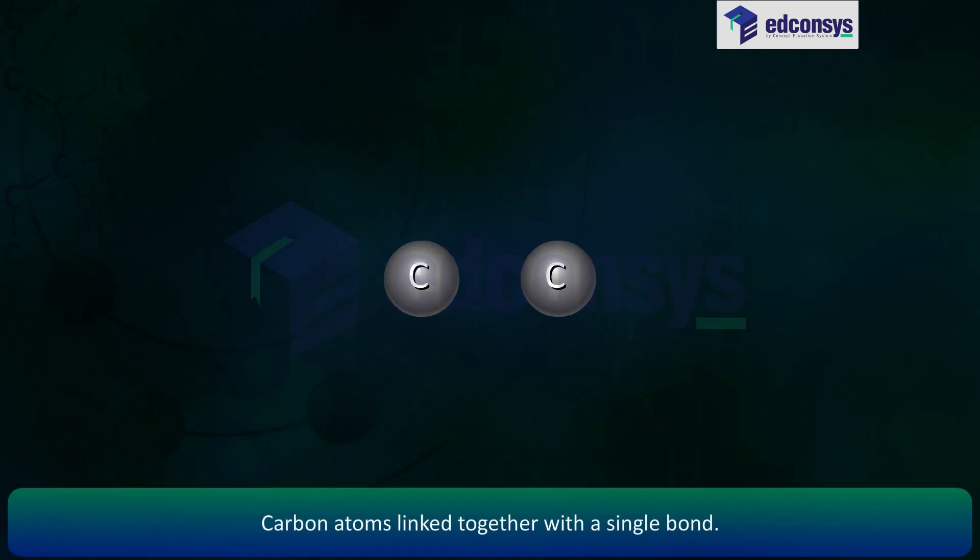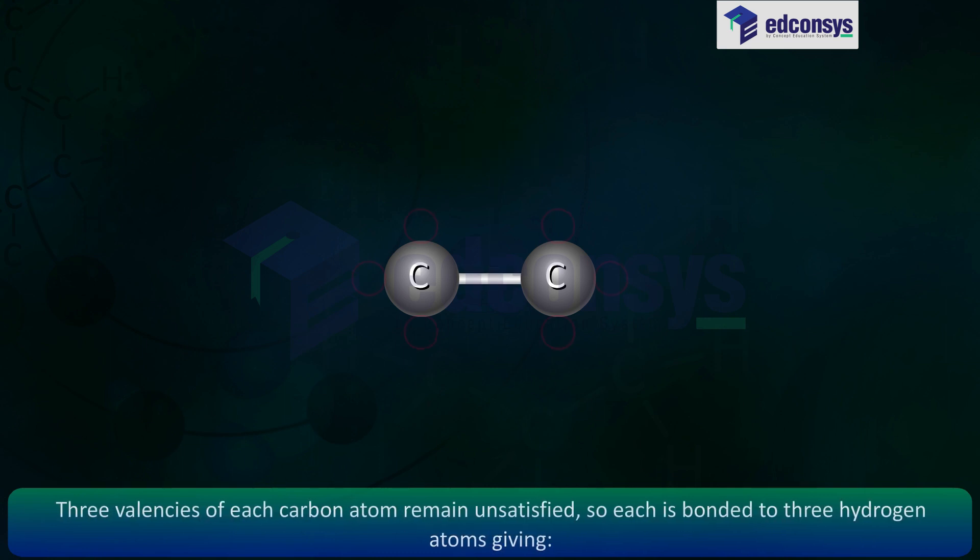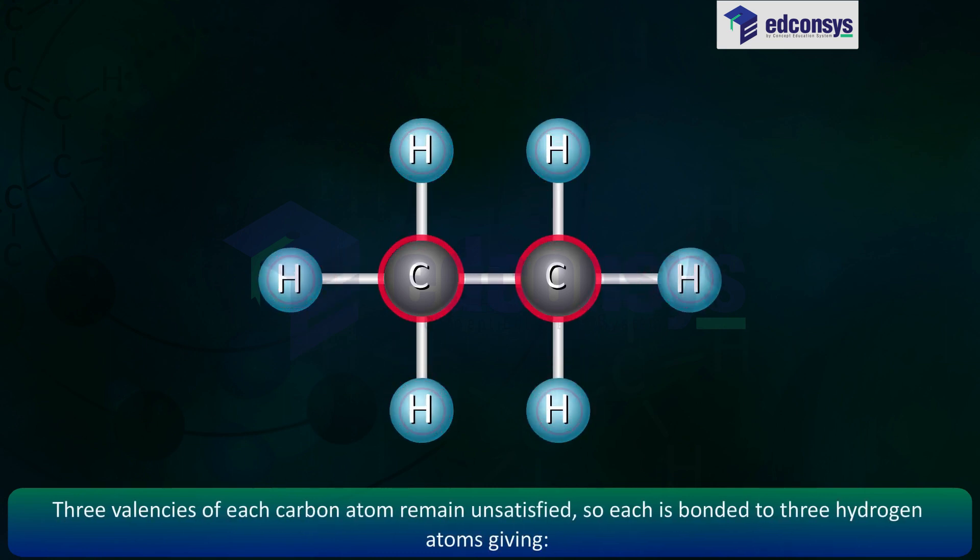Carbon atoms linked together with a single bond. Three valencies of each carbon atom remain unsatisfied. So, each is bonded to three hydrogen atoms.